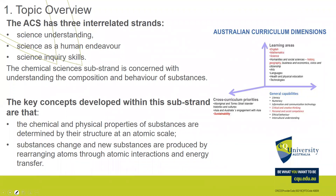Our topic this week — the ACS has three interrelated strands: science understanding, human endeavour, and inquiry skills. Within understandings we've got four substrands: biology, earth and space sciences were done in term one; chemical and physical sciences we're doing in term two. I don't want to turn a blind eye to human endeavour and inquiry skills — they're really important strands. When we struggle to teach chemistry we can actually teach inquiry extremely well, and in teaching inquiry we can deliver really good knowledge outcomes in the chemical sciences field.